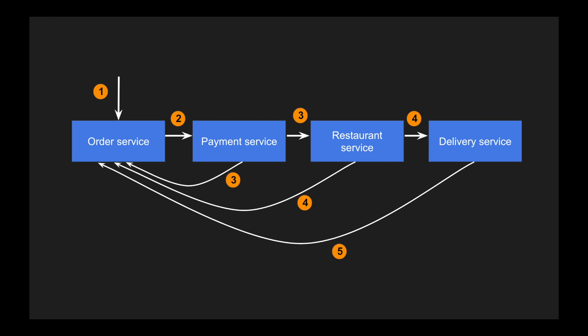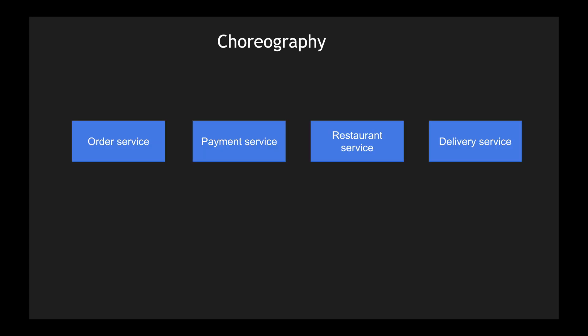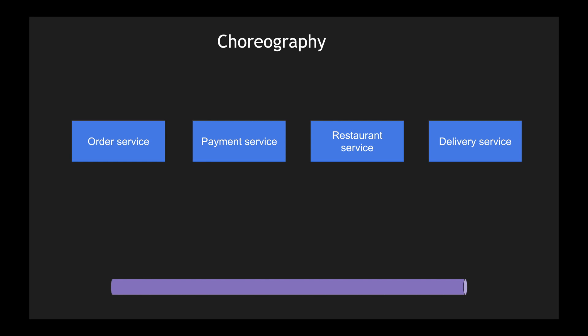There are two ways of implementing sagas. The first is choreography, or event-based mechanism — using choreography, events interact with microservices and you don't need synchronous transactions. The second is orchestration, or command-based, where a central orchestrator delegates requests to different microservices. Let's look at choreography first: all four microservices — order, payment, restaurant, and delivery — interact using a common queue.